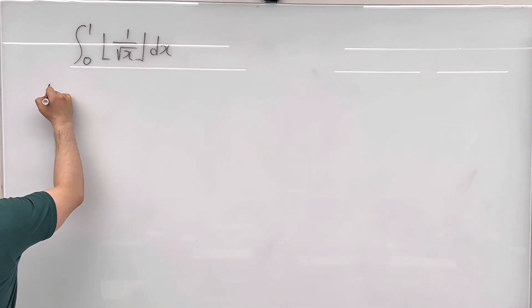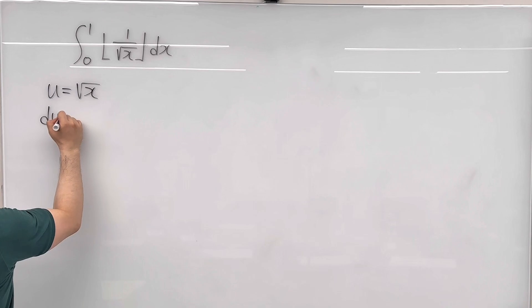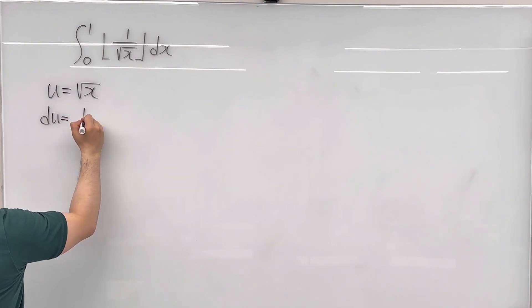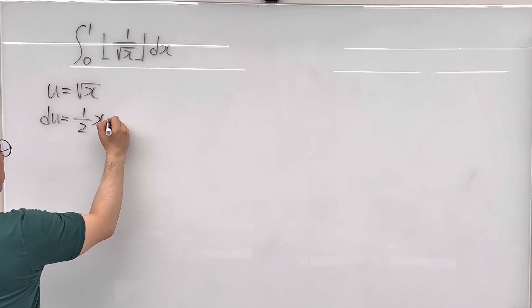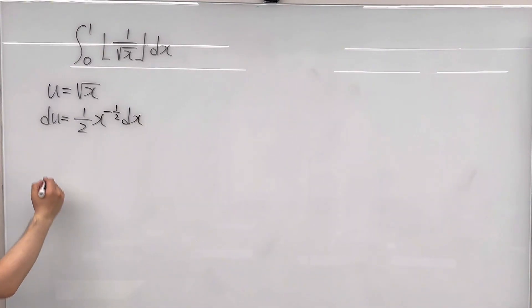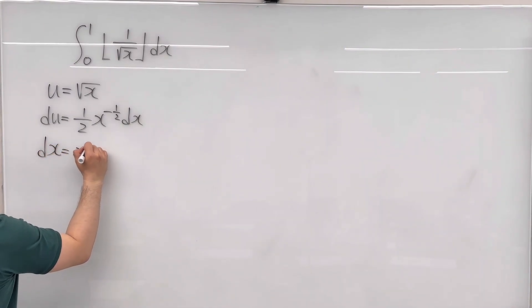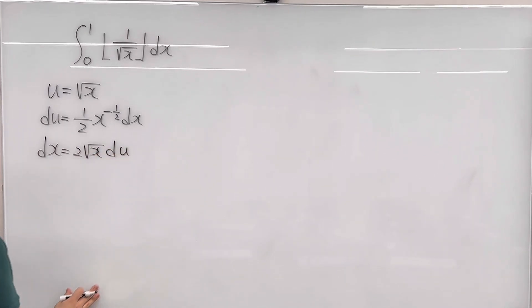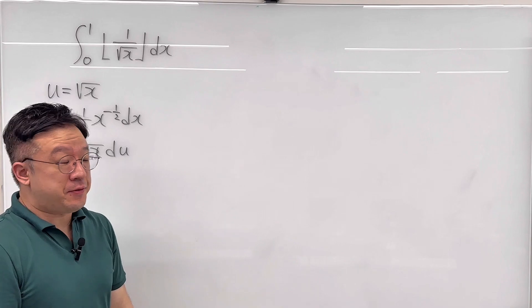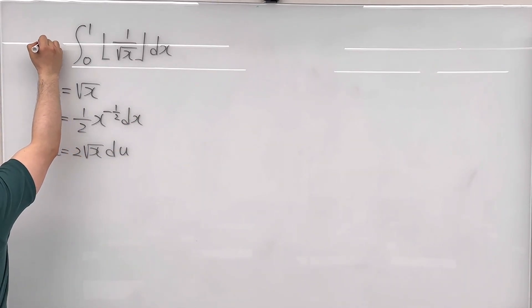Substitution first. Let me call u equal to square root of x. Then du has to be the same as 1 over 2 times x to the power of negative 1 over 2, dx. So dx has to be the same as 2 times square root of x du. Let me call this integral as I.